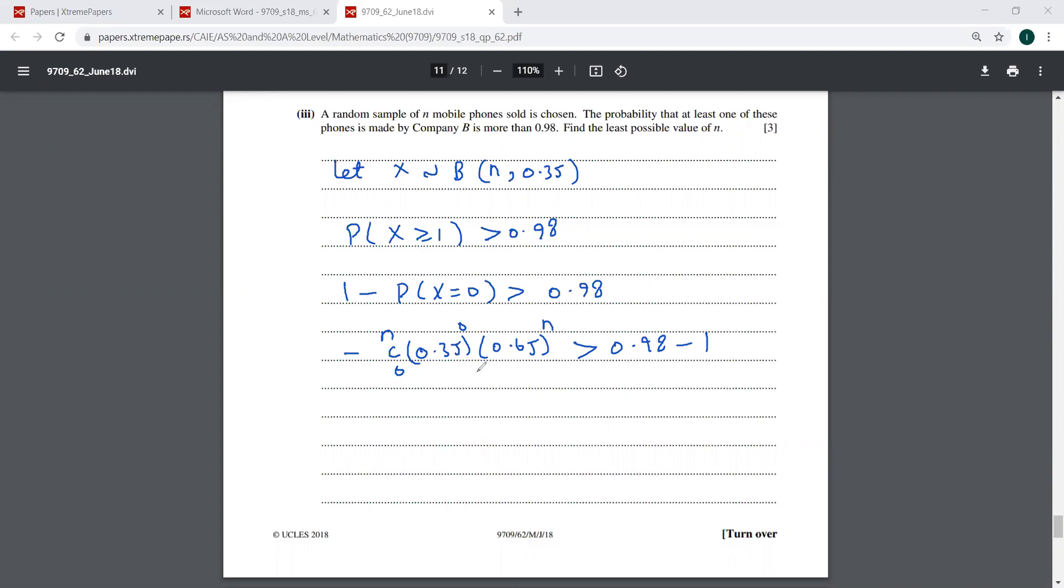So we are left with minus 0.65 raised to power N is greater than minus 0.02. So you cancel these minus signs. Don't do that cancellation because you have to reverse the sign of inequality as well. So this is 0.02.